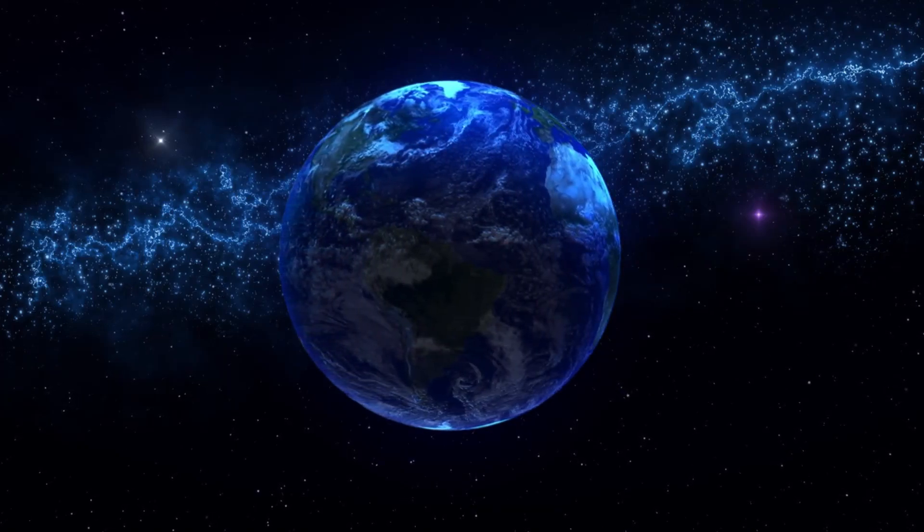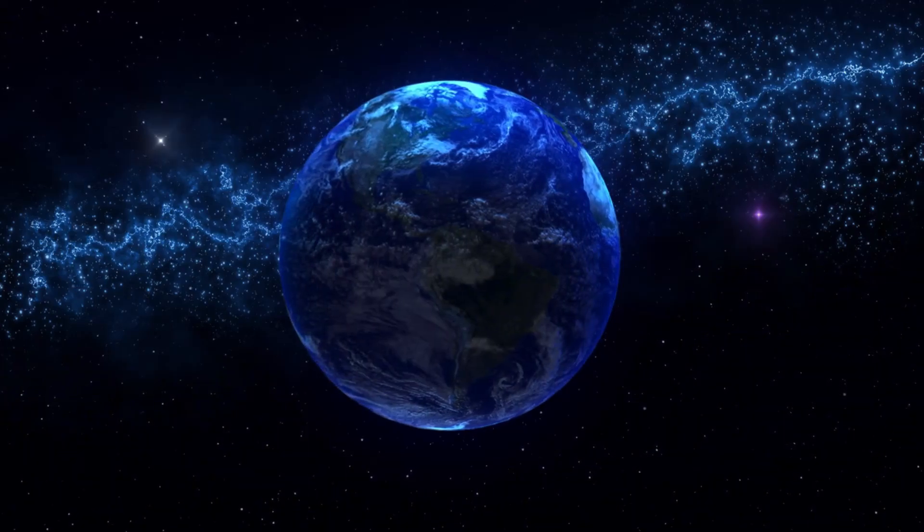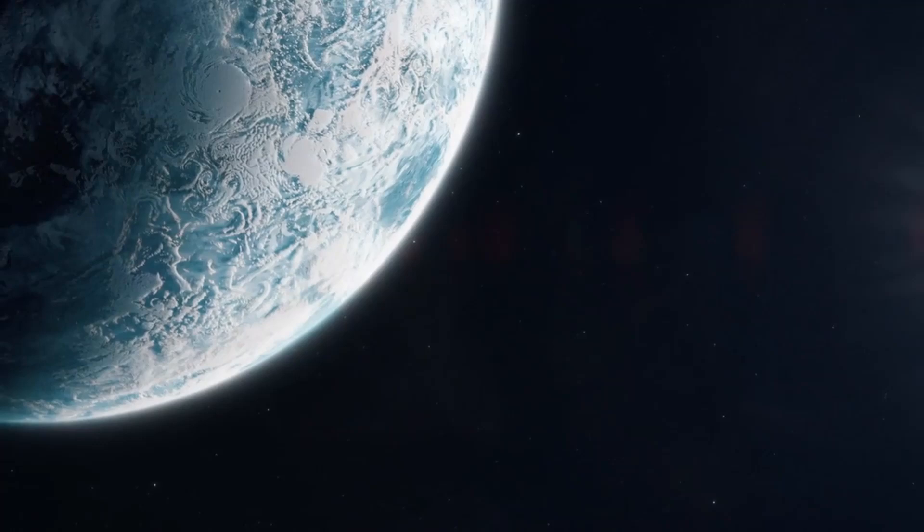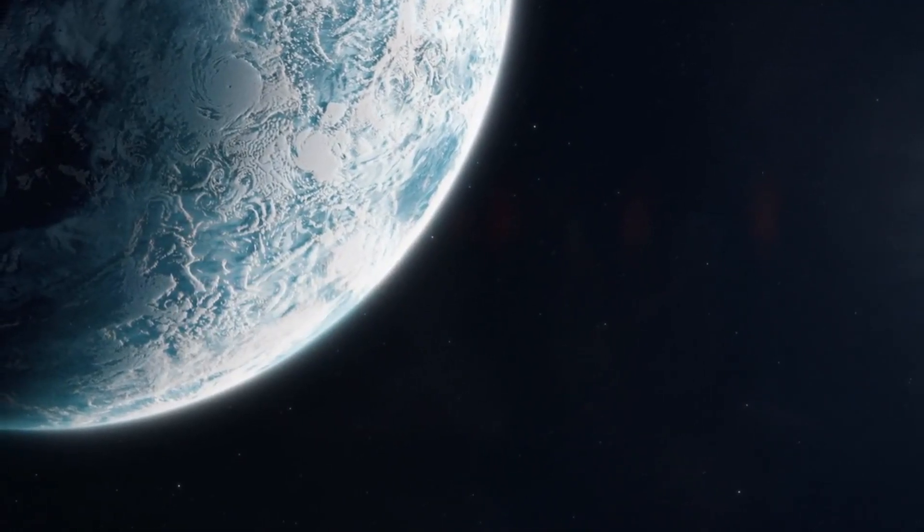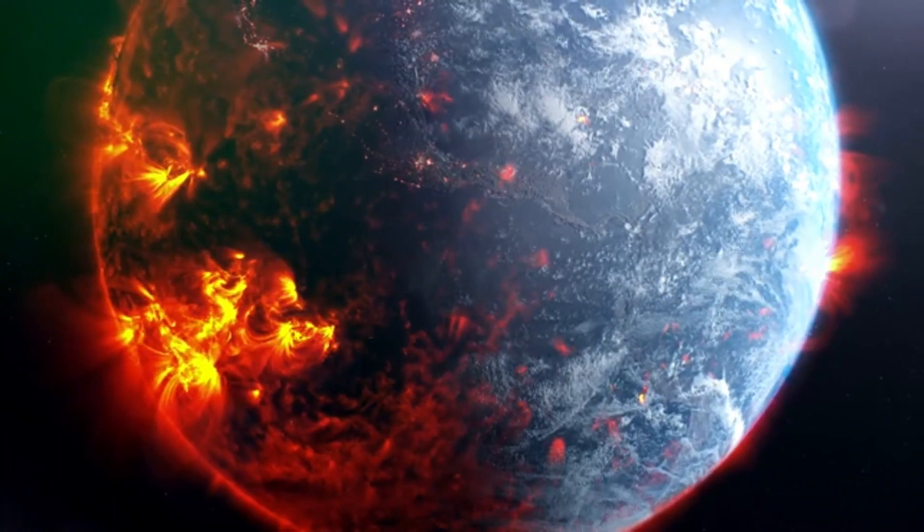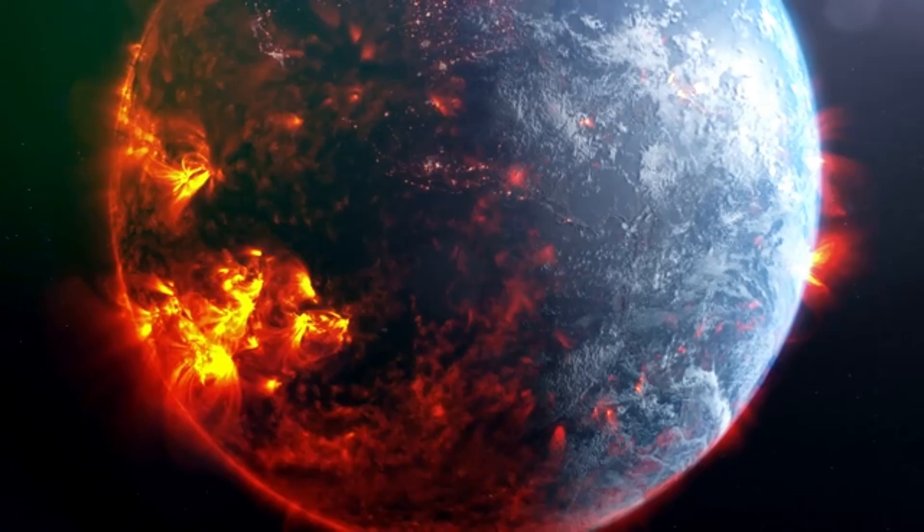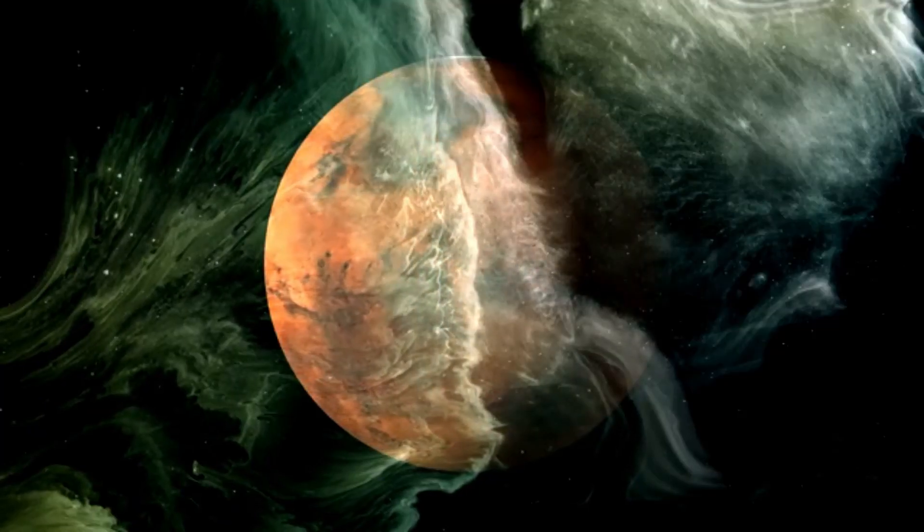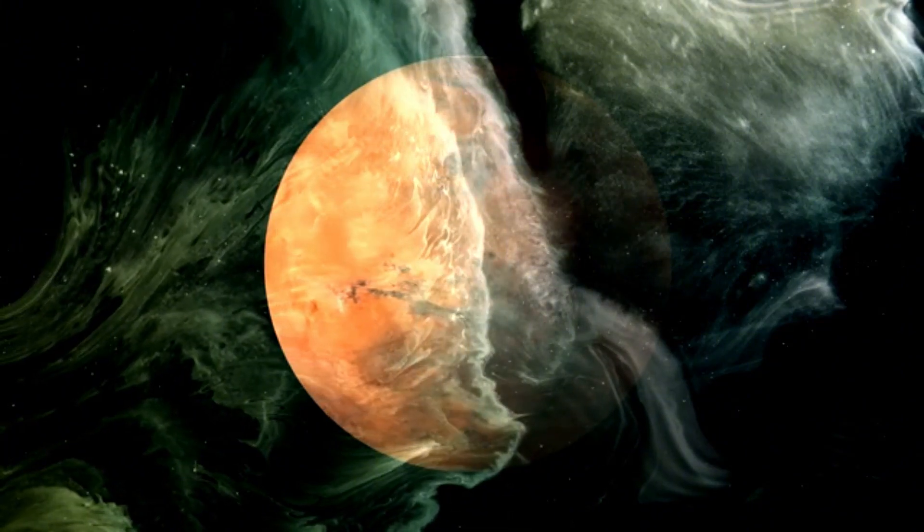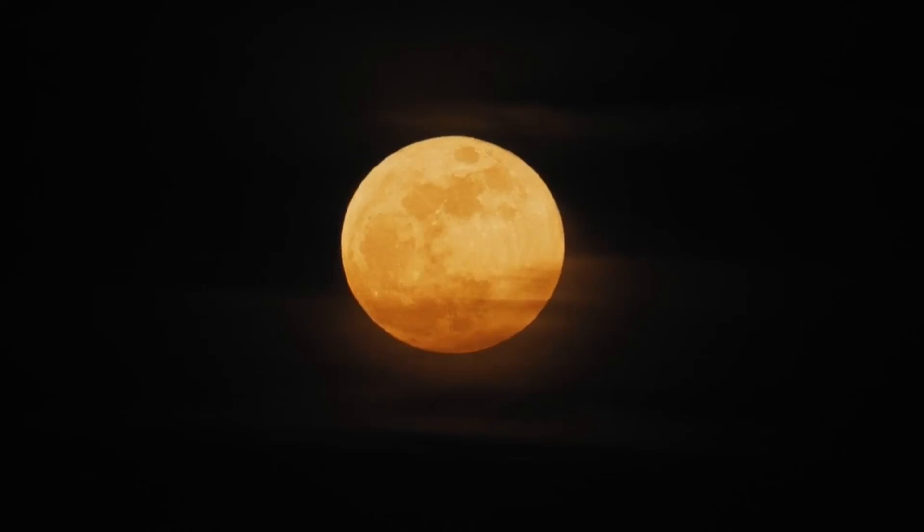Sunspots are not just fascinating solar features. They can sometimes produce powerful solar flares and coronal mass ejections. These phenomena release huge amounts of energy and charged particles into space. When directed toward Earth, they can disrupt satellite communications, affect power grids, and pose risks to astronauts in space. Additionally, increased solar activity can enhance auroras, but it can also raise radiation levels in Earth's upper atmosphere.